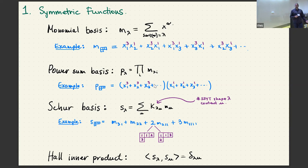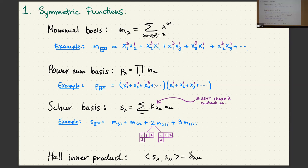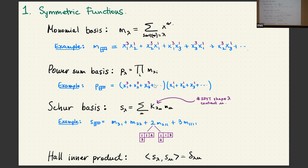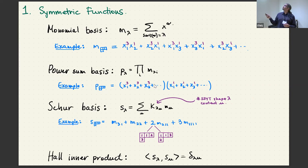And finally, we have the Schur symmetric functions, which are defined in many different ways, but here just for the sake of concreteness, I'll define them to be the generating functions for semi-standard Young tableaux. If we express them in terms of the monomial symmetric functions, the coefficients K_{lambda,mu} count the number of semi-standard Young tableaux of shape lambda and content mu.